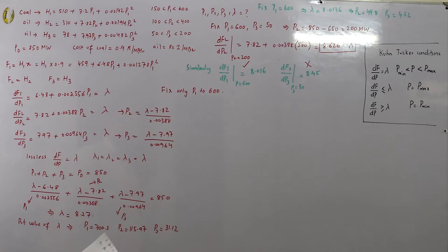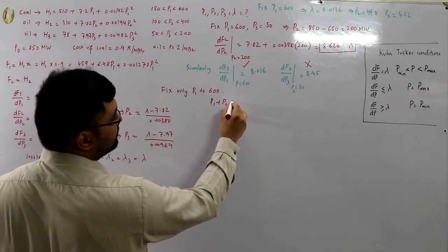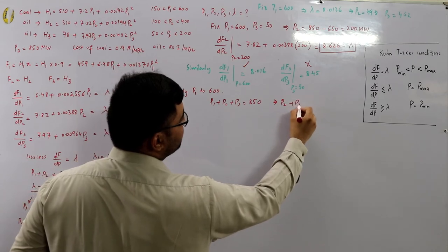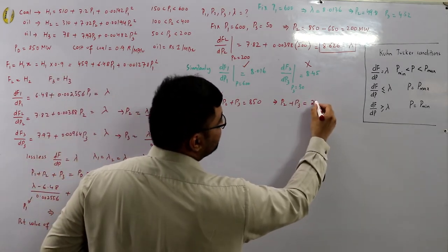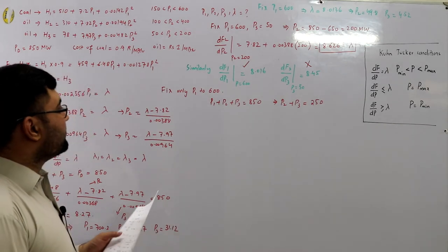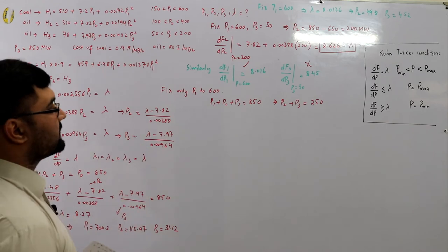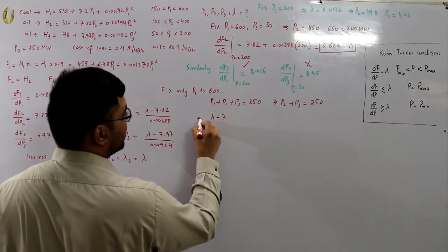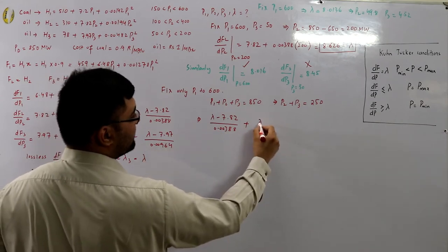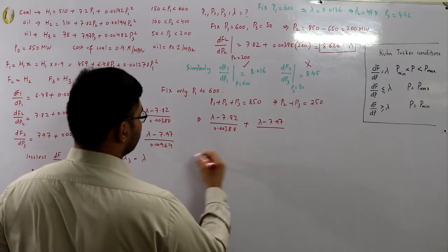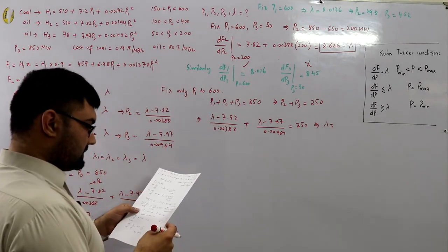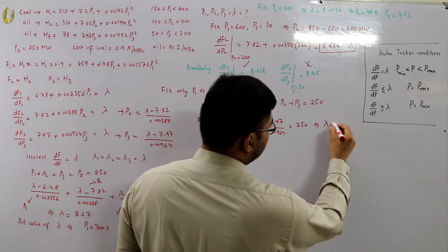With p1 = 600 MW fixed, the remaining demand is p2 + p3 = 850 − 600 = 250 MW. Substituting the expressions: (λ − 7.82)/0.00388 + (λ − 7.97)/0.00964 = 250. Solving gives λ = 8.57.